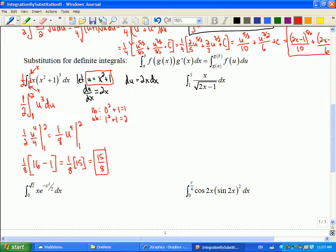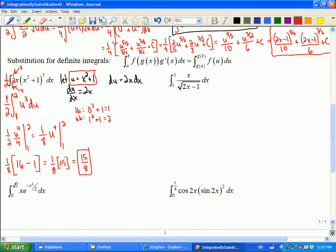So again, there's nothing to stop you from putting it back in terms of x and using the original bounds, other than the fact to say, are you crazy? Why would you want to do the extra work? It's generally simpler if you just change the bounds, because that was the whole point of substituting in the first place, was to make a simpler expression. Okay, so you're up. Make a substitution here and change your bounds.